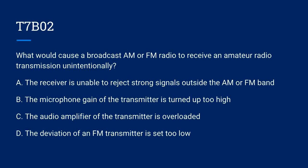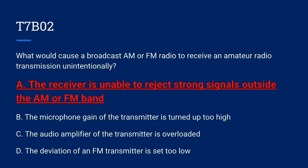T7B02. What would cause a broadcast AM or FM radio to receive an amateur radio transmission unintentionally? A. The receiver is unable to reject strong signals outside the AM or FM band. B. The microphone gain of the transmitter is turned up too high. C. The audio amplifier of the transmitter is overloaded. Or D. The deviation of an FM transmitter is set too low. The correct answer is A. The receiver is unable to reject strong signals outside of the AM or FM band.